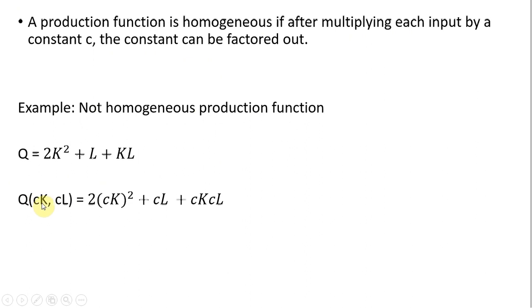We're going to multiply each input by C. So we've got C here. Keep in mind, since K is squared, C will be squared as well. C times L, C times K, and C times L.